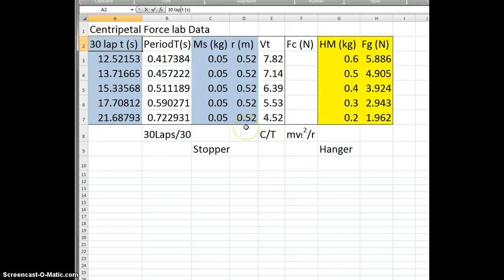So I put this in. My radius was 52 centimeters, so 0.52 meters. And so I recorded my 30 laps. I recorded my stopper mass. I recorded my radius. I also recorded my hanging mass, which I then turned into a force of gravity, because let's face it, we're studying forces here.